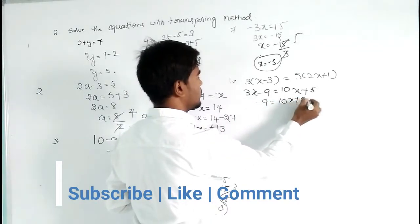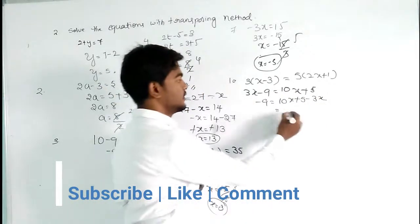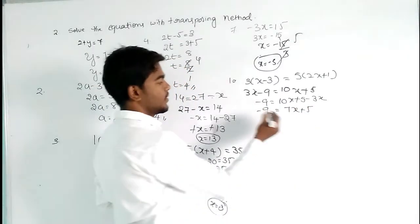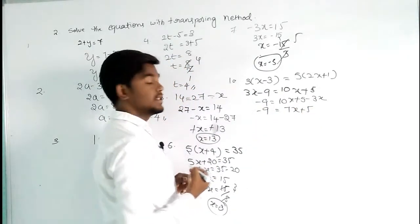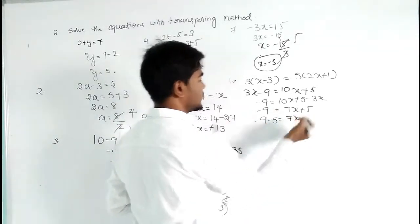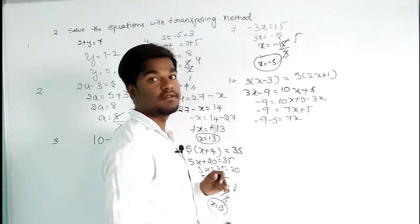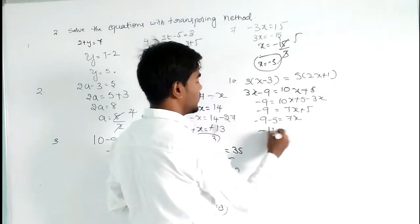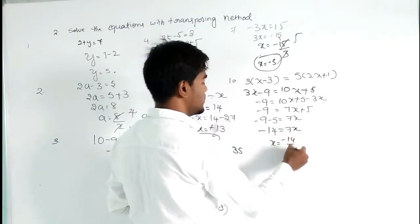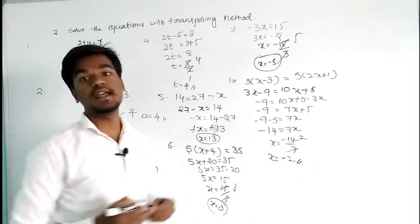So 10x - 3x = 7x, giving -9 = 7x + 5. Transposing 5 to the left side: -9 - 5 = 7x, so -14 = 7x. Therefore x = -14 ÷ 7, which gives x = -2. This is the answer.